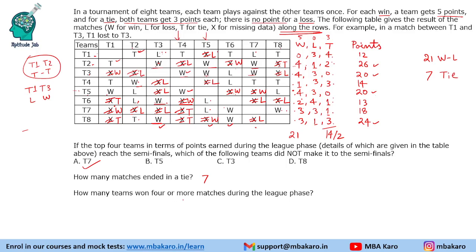How many teams won 4 or more matches during the league phase? Teams T2, T3, and T5 each won 4 matches during the league phase.